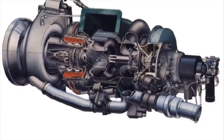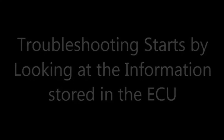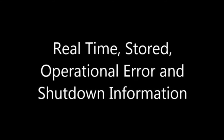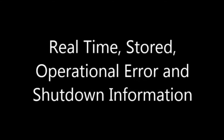The APU ECU also records errors found during operation and the reasons for a shutdown. When a problem arises, troubleshooting will start by reviewing the stored APU information. This video will step through the CDU menus to find real-time, stored, operational error, and shutdown information for the APU.